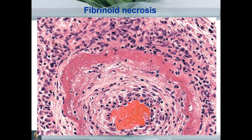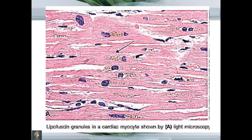This slide shows cardiac muscle fibers. You can see deposits of brown-colored pigment known as lipofuscin, which is the wear-and-tear pigment and is a part of the aging process.